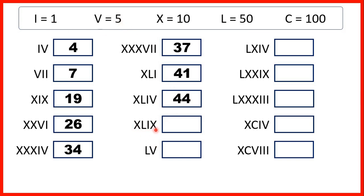XLIX is 49, because XL is 10 before 50, so that's 40, and IX is 1 before 10, so that's 9. LV is 55, because L is 50, and V is 5.